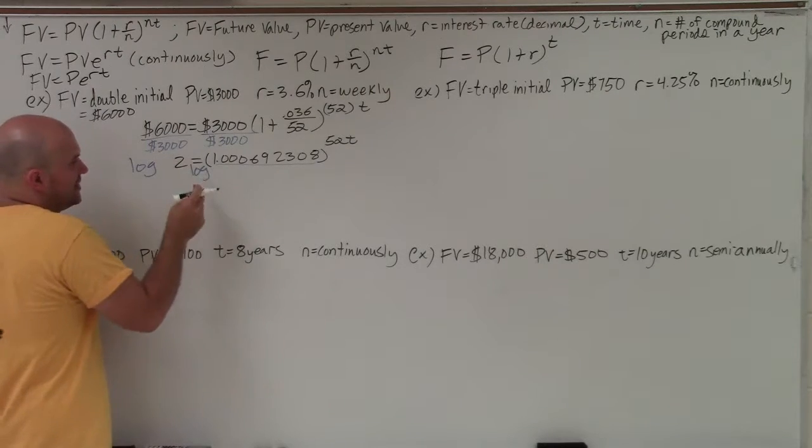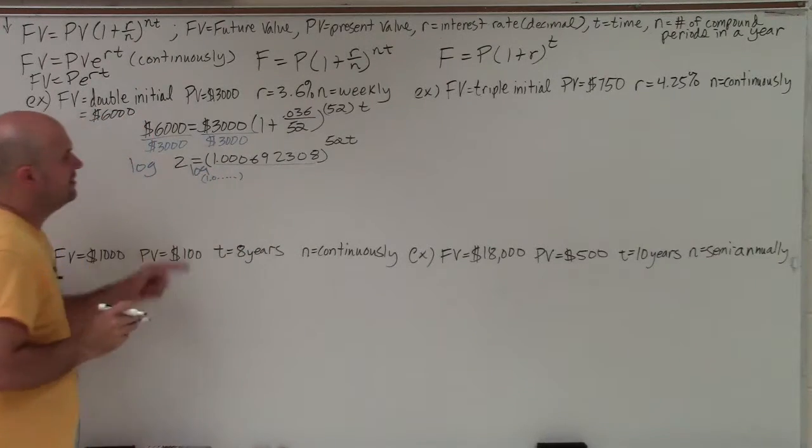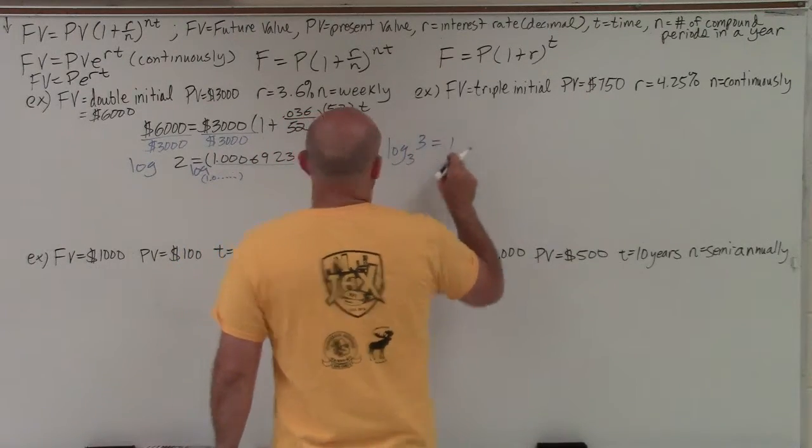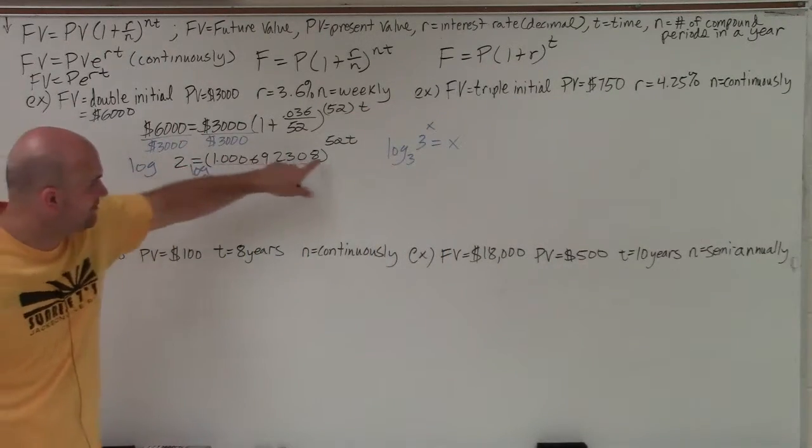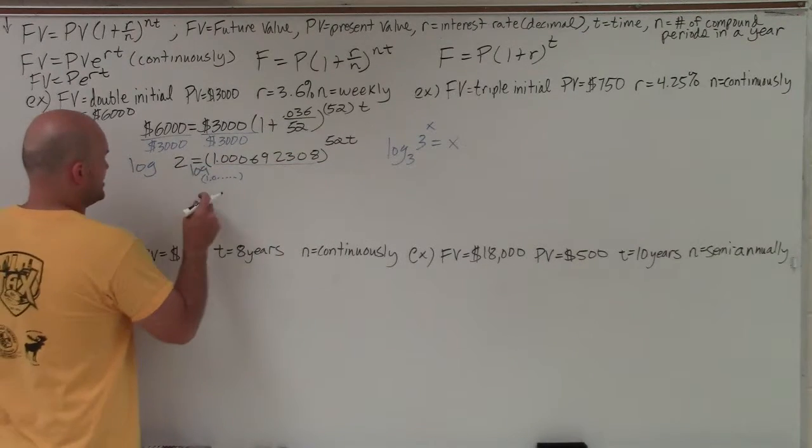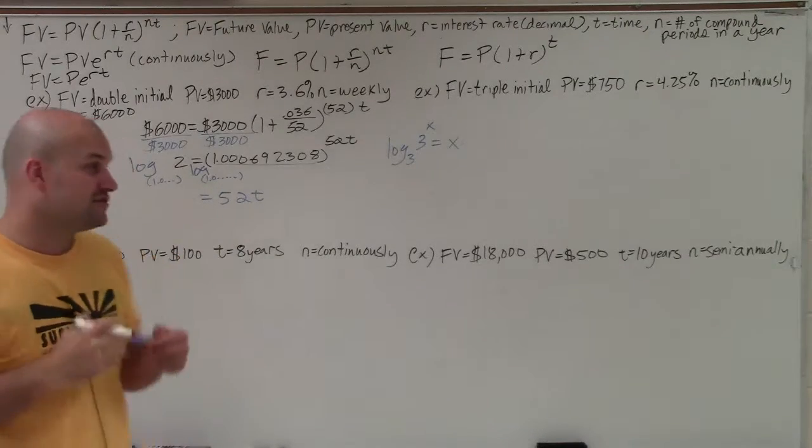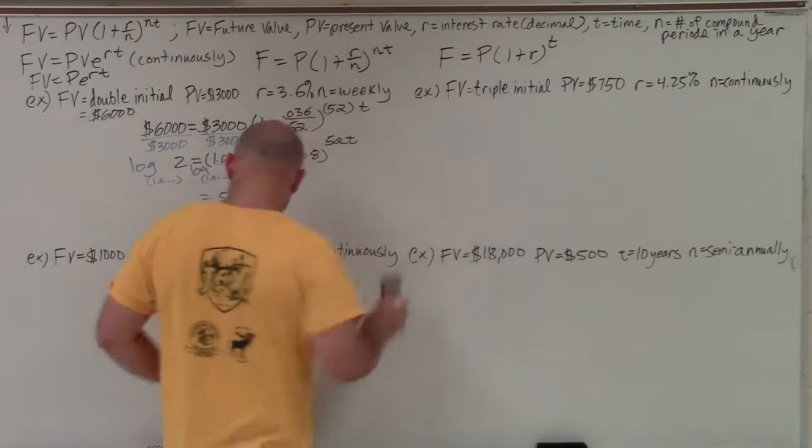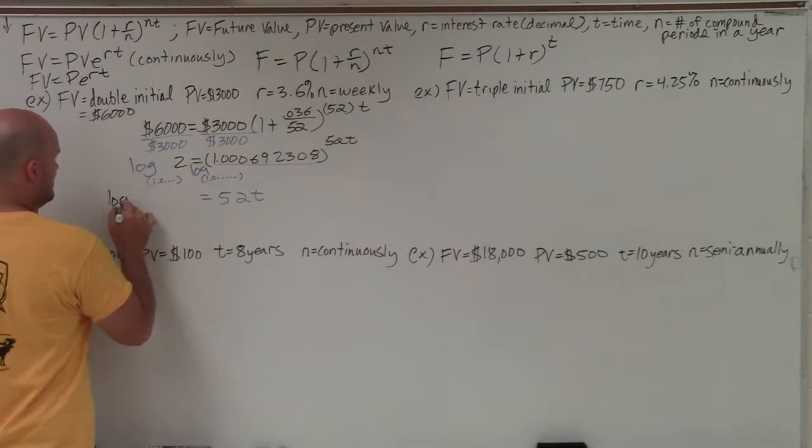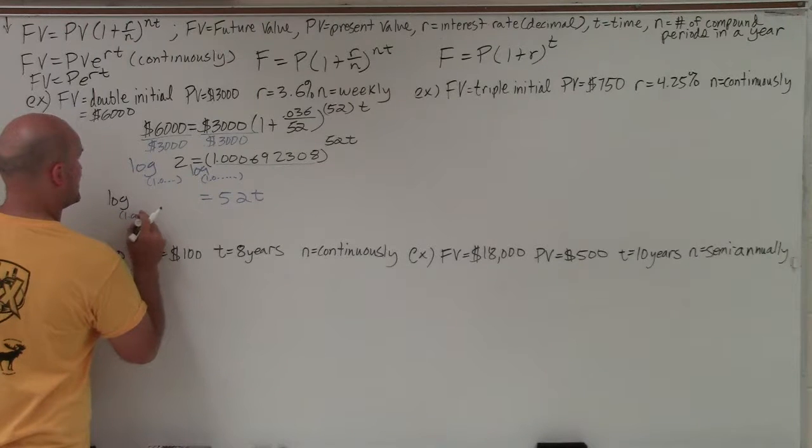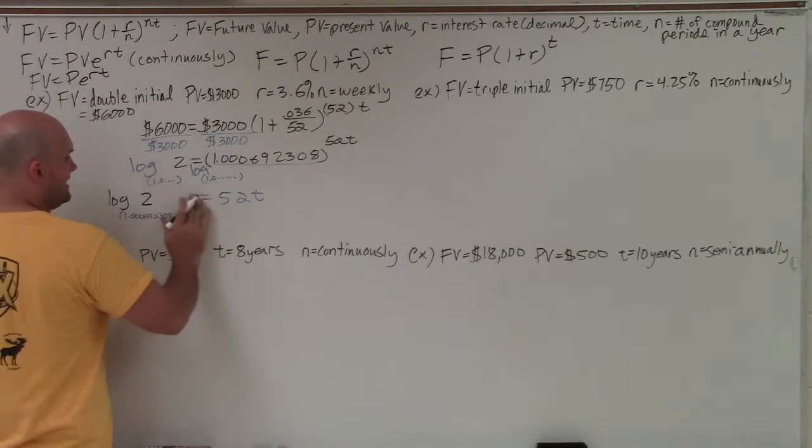Well fortunately, what's nice about this is the log of that answer. And if that's raised to a power x, then that's equal to x. So therefore, if I take the log base of this, it's just going to leave me this answer, which is 52t. But the log base of 1.0 dot, dot, dot of 2 is going to be some number. So therefore, what I have to use is use the change of base formula, since my calculator does not recognize that as a base. So it's going to look something crazy, but it's going to look like this. It's going to be log base 1.000692308 raised to the second power, or of 2, is equal to 52t.